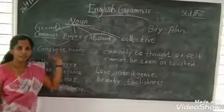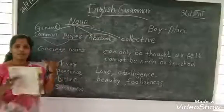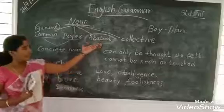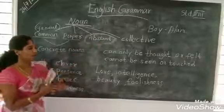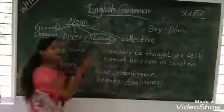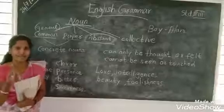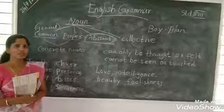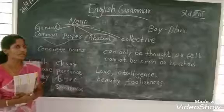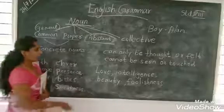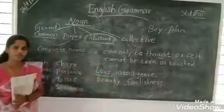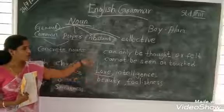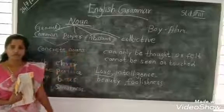Common noun and proper noun are already completed. Today we will discuss about abstract noun. What is abstract noun? For example, this word — read this word — love. Love is an abstract noun.